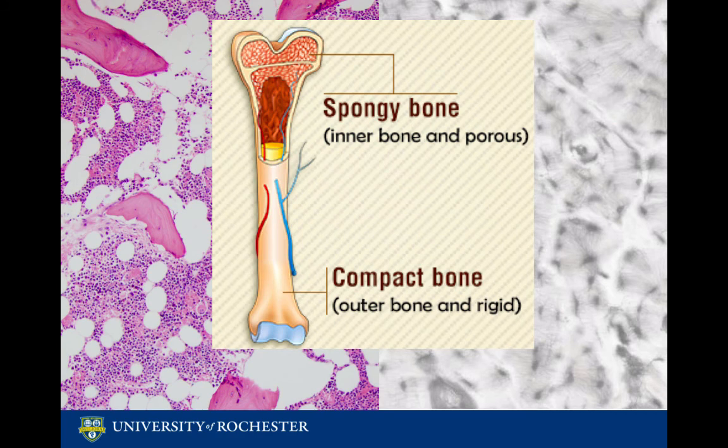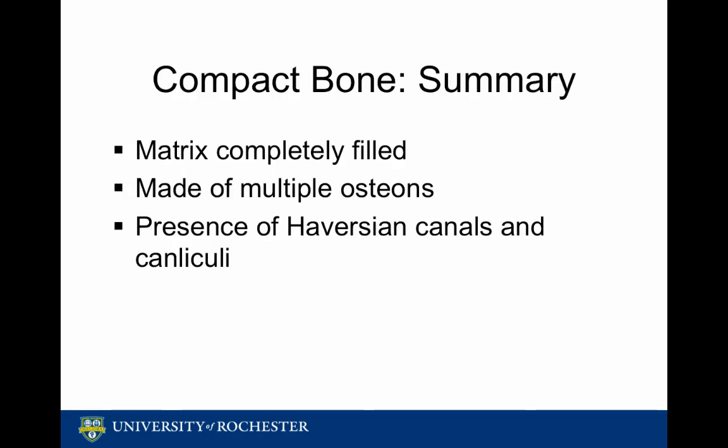This figure helps illustrate where each type of bone is located and gives a better grasp of the normal histology of bone. To sum up compact bone: the matrix is completely filled by solid organic substances, and the bone is made up of multiple osteons or haversian systems, containing haversian canals and canaliculae. This concludes our review of the normal histology of spongy bone and compact bone.